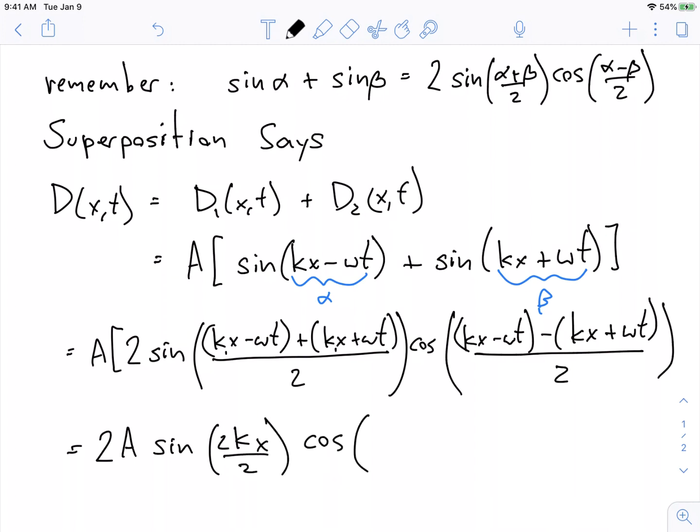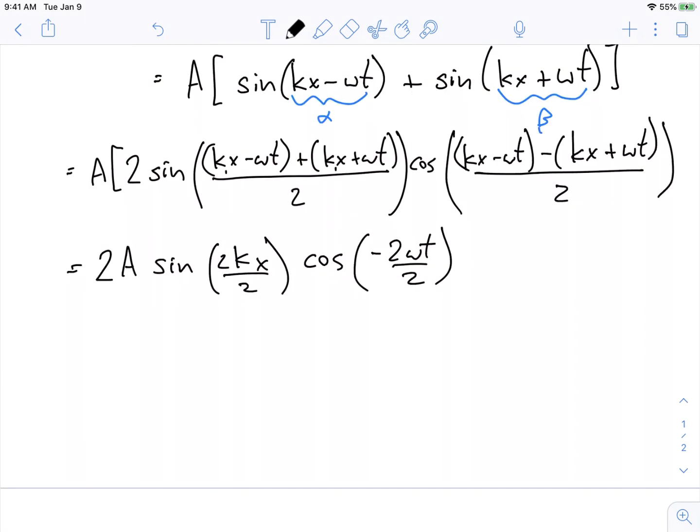Times cosine, and what do I get here? I get kx minus kx so those cancel out, but then I get minus ωt minus ωt. So I get minus 2ωt over 2. So D(x,t) = 2A sin(kx) cos(ωt). What I've done here is used the fact that cosine is an even function to say that cosine of a negative value is cosine of the positive value.